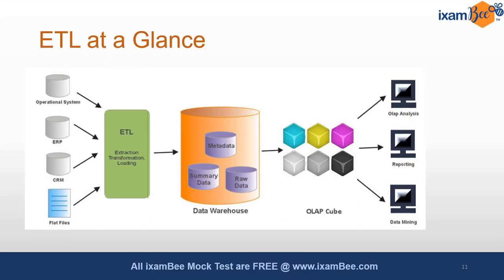To summarize everything at a glance: we have different sources, then we have ETL, and then we have the data warehouse. In the data warehouse we have metadata, summary data, and raw data. Out of this we can have OLAP cubes, and on OLAP cubes we apply data mining, data reporting, and OLAP analysis. This is the entire flow of what a data warehouse is and how we can use it. Data mining techniques sit on top of it, along with metadata and OLAP cubes. The data warehouse is an intermediate step — not the final destination — leading to a rich ecosystem of algorithms and analytical techniques.